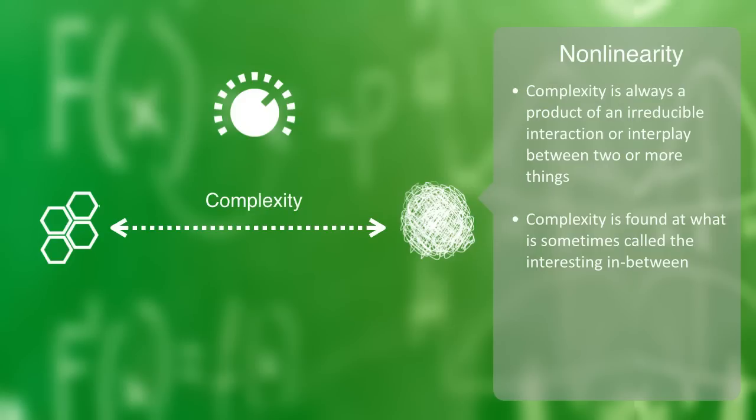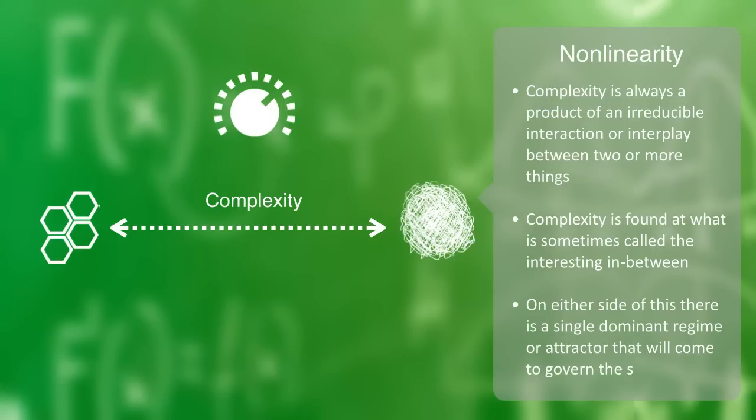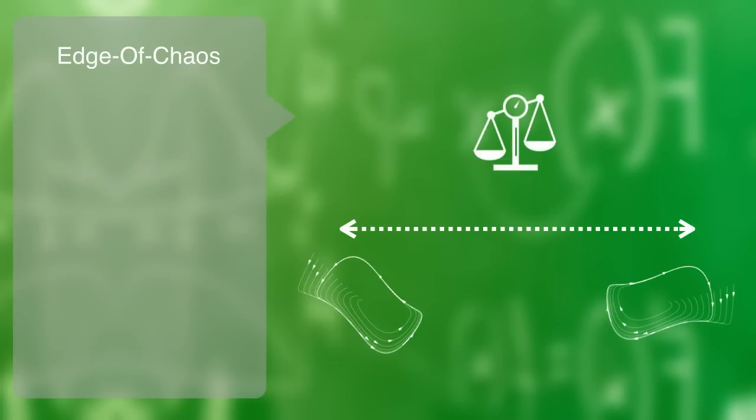On either side of this, there is a single dominant regime or attractor that will come to govern the system's behavior. It is only when a system is far from its equilibrium, away from one of these stable attractor regimes, that we get a phase transition area representing the interplay between the two regimes. In this space, the system is much more sensitive to small fluctuations that can take it into either basin of attraction.